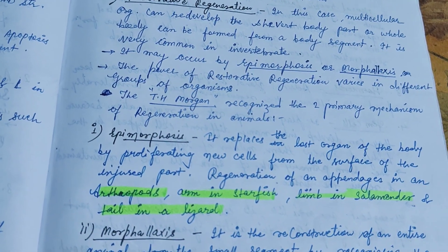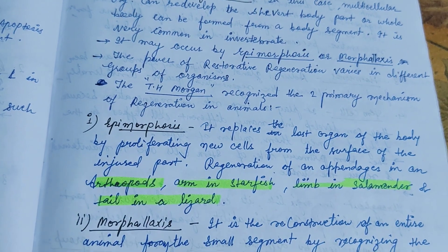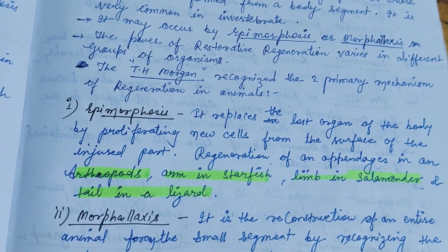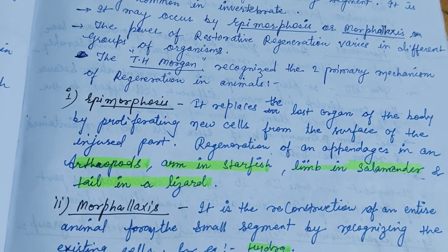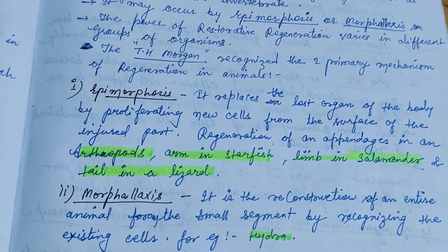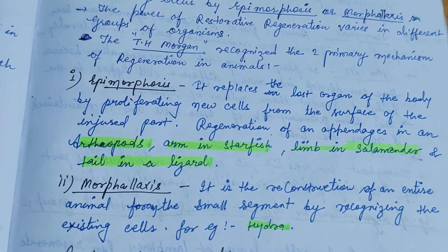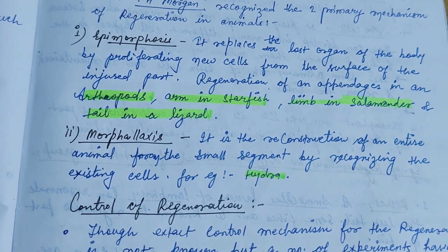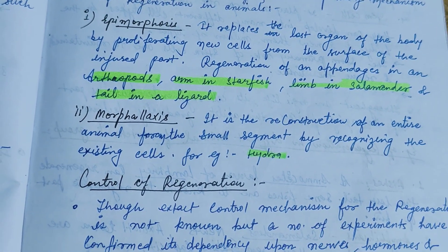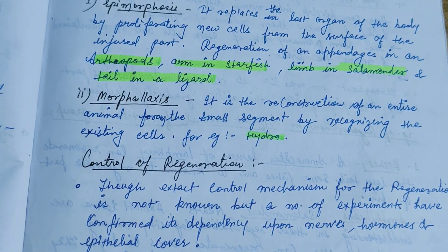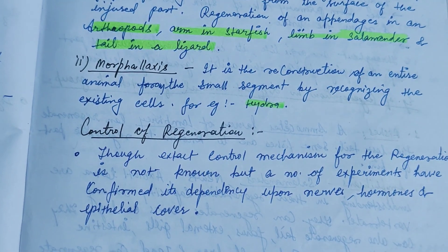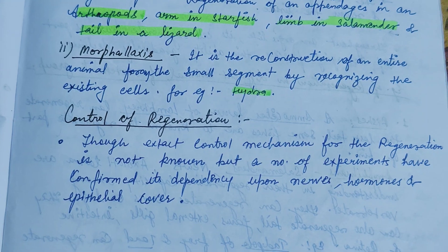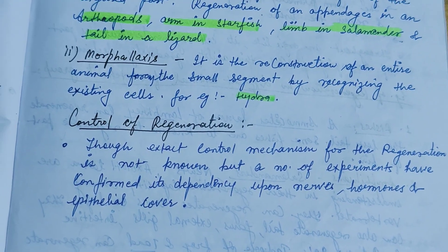In restorative regeneration, the whole body can be formed from body segments. It may occur by epimorphosis or morphallaxis. Epimorphosis replaces the lost organ of the body by proliferating new cells from the surface of the injured part. In morphallaxis, reconstruction of an entire animal occurs from a small segment by reorganizing existing cells — for example, hydra.